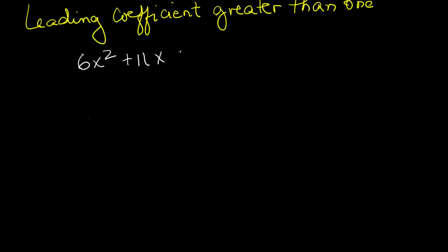Part two, harder quadratics with leading coefficient greater than 1. Now what if the number in front of x squared is not 1? That is where many students get stuck. Let's try 6x squared plus 11x plus 4. Here's the trick.